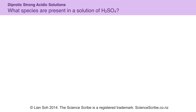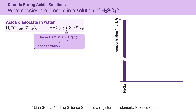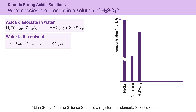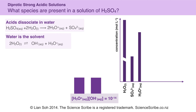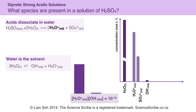In another strong acid example, we're going to look at sulfuric acid. My opening strategy is still the same, and it's still an acid, so I show an acid dissociating in water as my equation. What's different this time is I have a 2 to 1 ratio because this is a diprotic acid — I have 2 hydronium ions for every 1 sulfate ion, so my concentration of hydronium is twice as much compared to sulfate. Water is still the solvent, and from the equation it's clearly acidic, so there is a lot more hydronium compared to hydroxide.